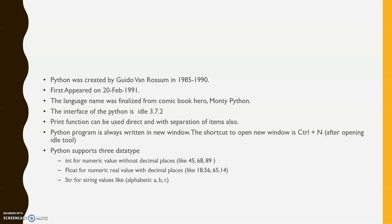Python supports three types of data types: integer, float, and string. For integer class we write int, for float class we write float, and for string class we write str.